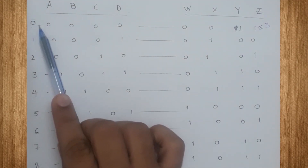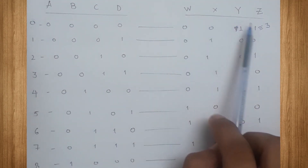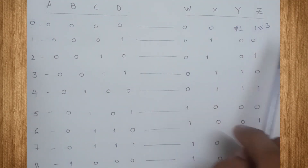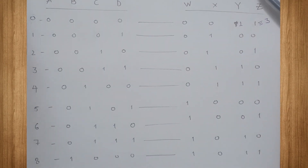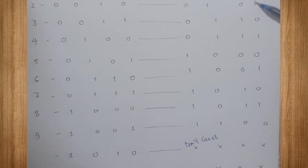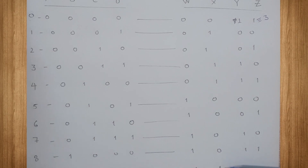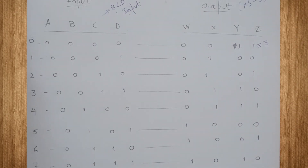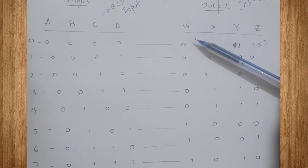So 0 in BCD input should be converted to 3 in XS3 output. Correspondingly, the truth table maps BCD values to XS3 outputs: 3, 4, 5, 6, 7, 8, 9, 10, 11, and 12. Now let us minimize the circuits for W, X, Y, and Z using the K-map.